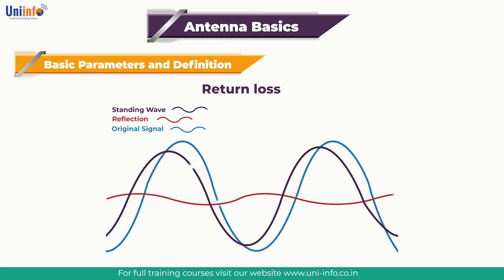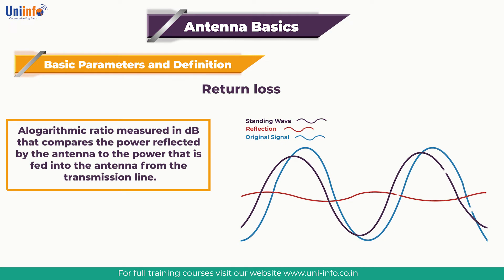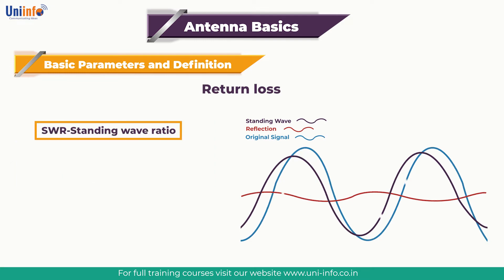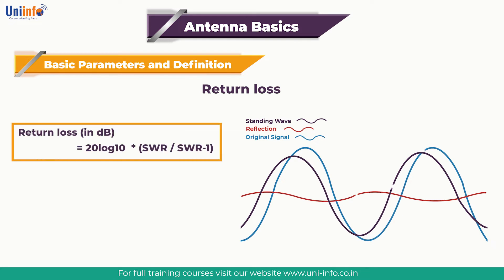The third parameter is return loss. Return loss is another way of expressing mismatch — it is a logarithmic ratio measured in decibels that compares the power reflected by the antenna to the power that is fed into the antenna from the transmission line. The relationship between SWR and return loss is: return loss equals 20 log base 10 of SWR divided by (SWR minus 1).